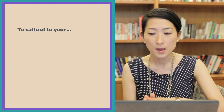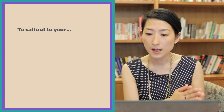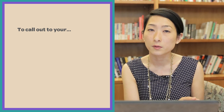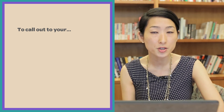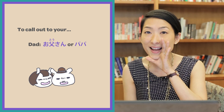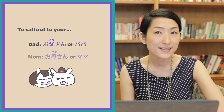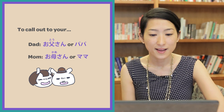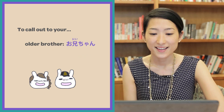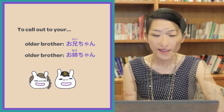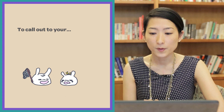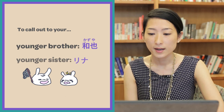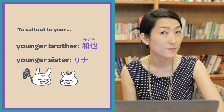Now, to directly address your family members is another thing, and there are some vocabulary overlap. For example, to call out to get their attention, you say: o-to-san, or papa, o-ka-san, mama, o-ni-chan, and o-nee-chan. To talk to your younger siblings, you use their name — for example, Kazu-ya or Nina — or nicknames.